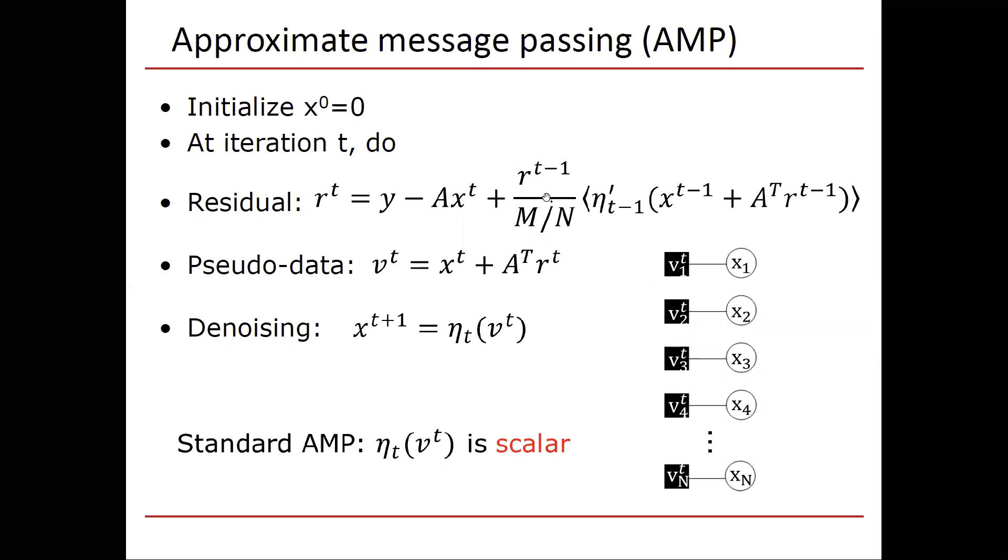Another comment that I'd like to make is that in a standard AMP, we have x is iid, and every element in the pseudodata v is going to be the iid x plus iid Gaussian noise. And because of that, because the x and the noise in v, which we denote by q, because they're both going to be iid, it makes sense to use a scalar denoiser. A scalar denoiser means element by element denoiser, and it makes sense that each of them will use the same denoising function.